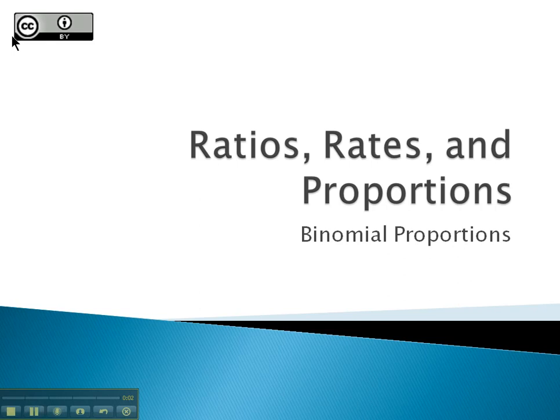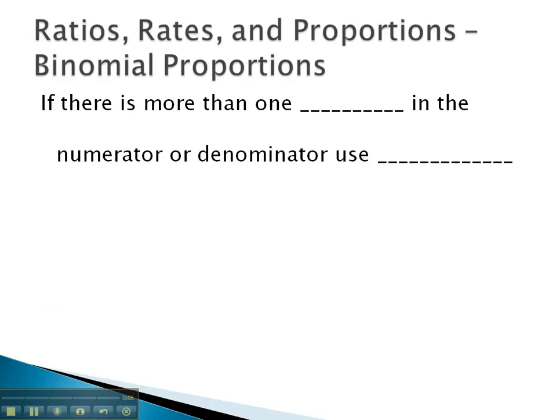In this video, we're going to take a look at solving a proportion which has a binomial or more than one term in it. If there is more than one term in either the numerator or denominator of one of our ratios in the proportion, we have to remember to use parentheses to hold that binomial together when we're calculating the cross product.